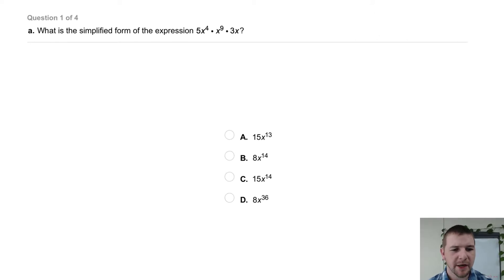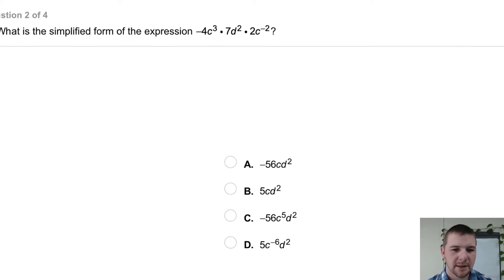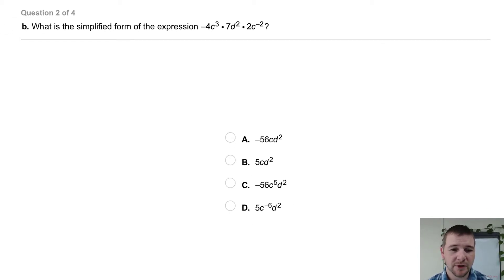Your turn. Part a, what is the simplified form of the expression 5x to the fourth times x to the ninth times 3x? Part b, how about the expression negative 4c cubed times 7d squared times 2c to the negative 2 power.